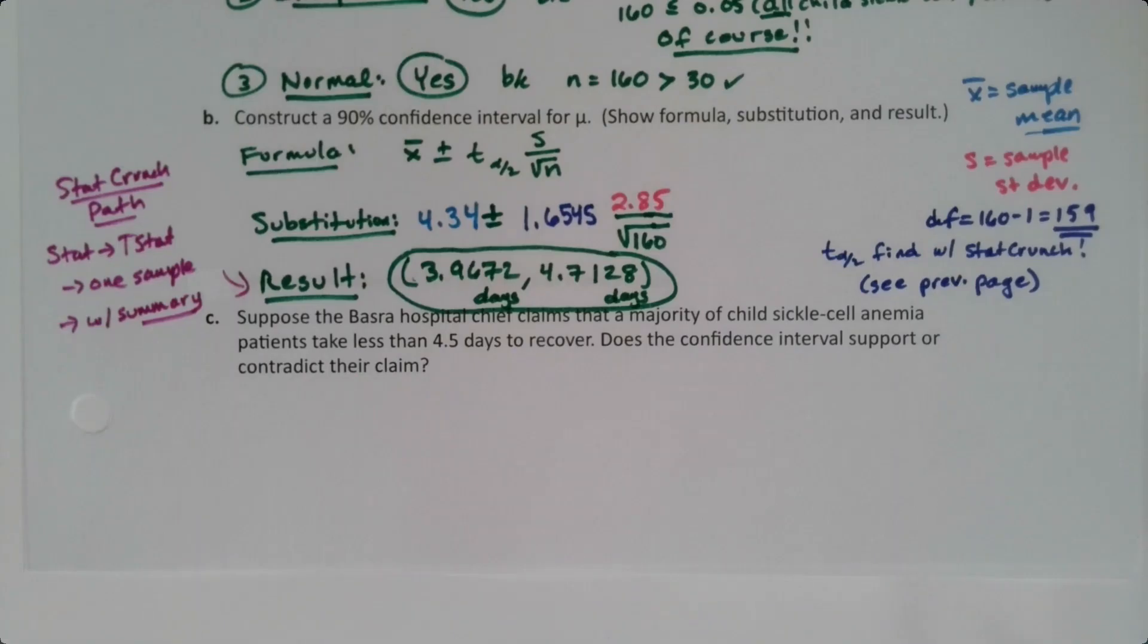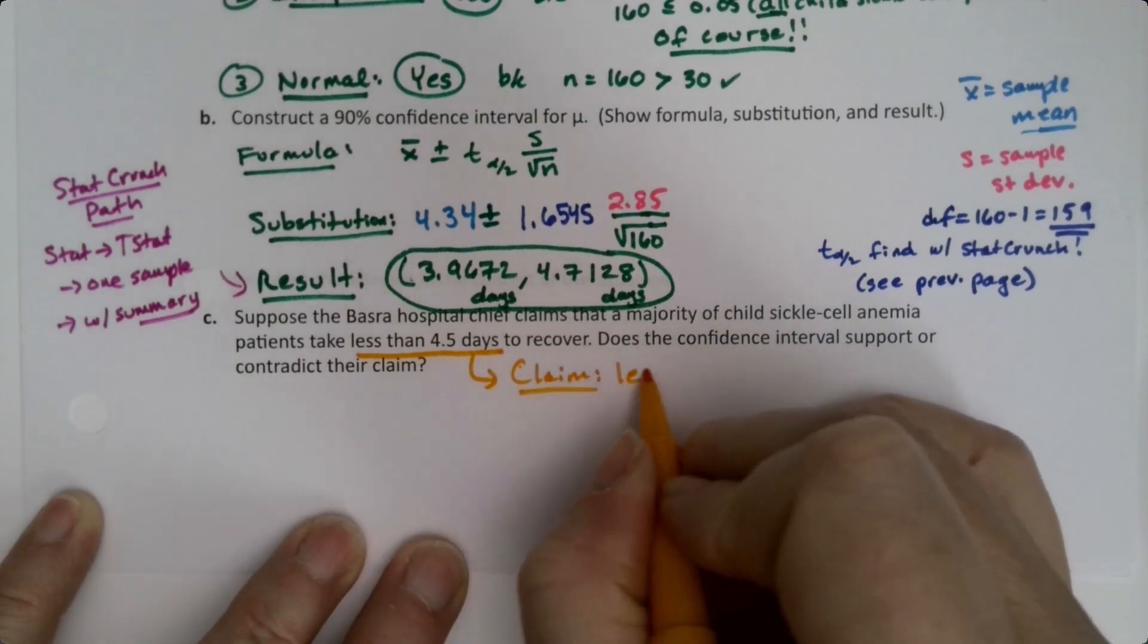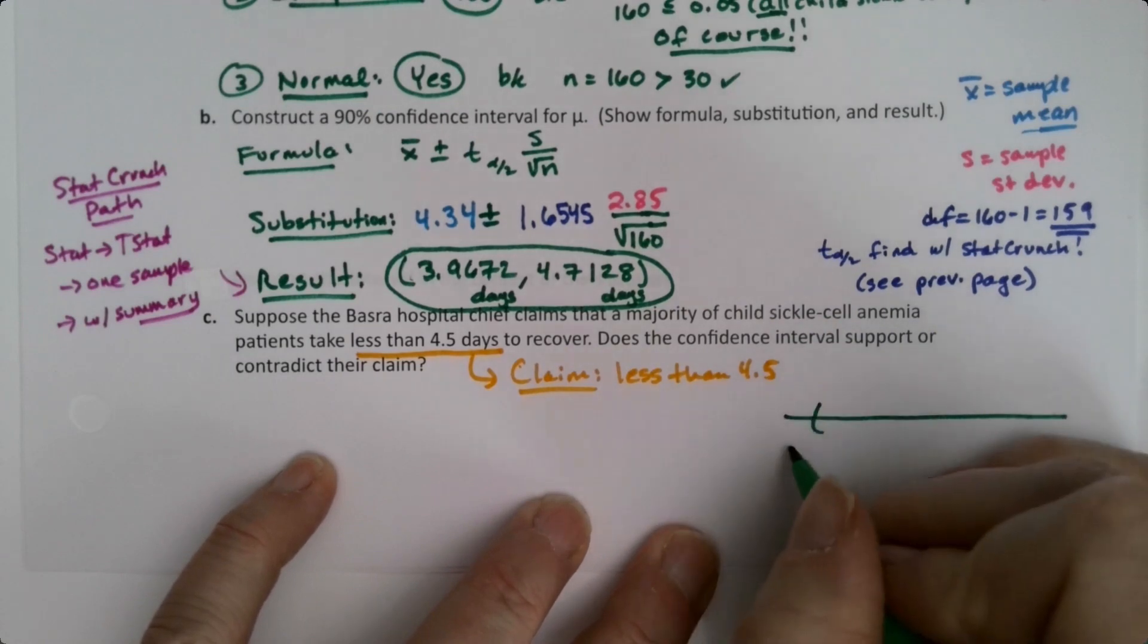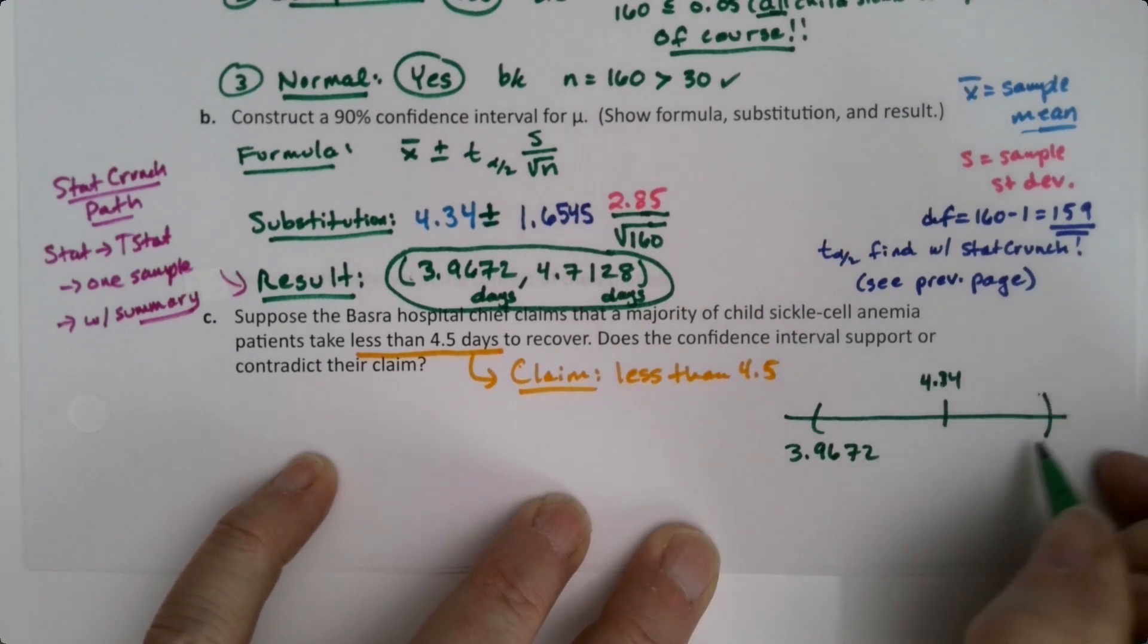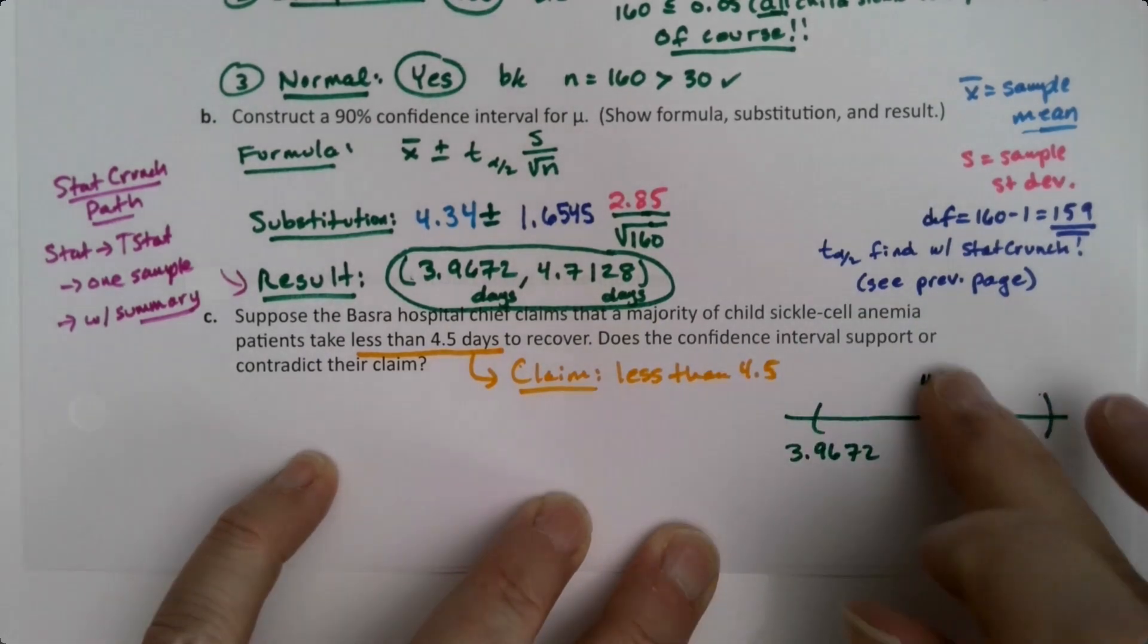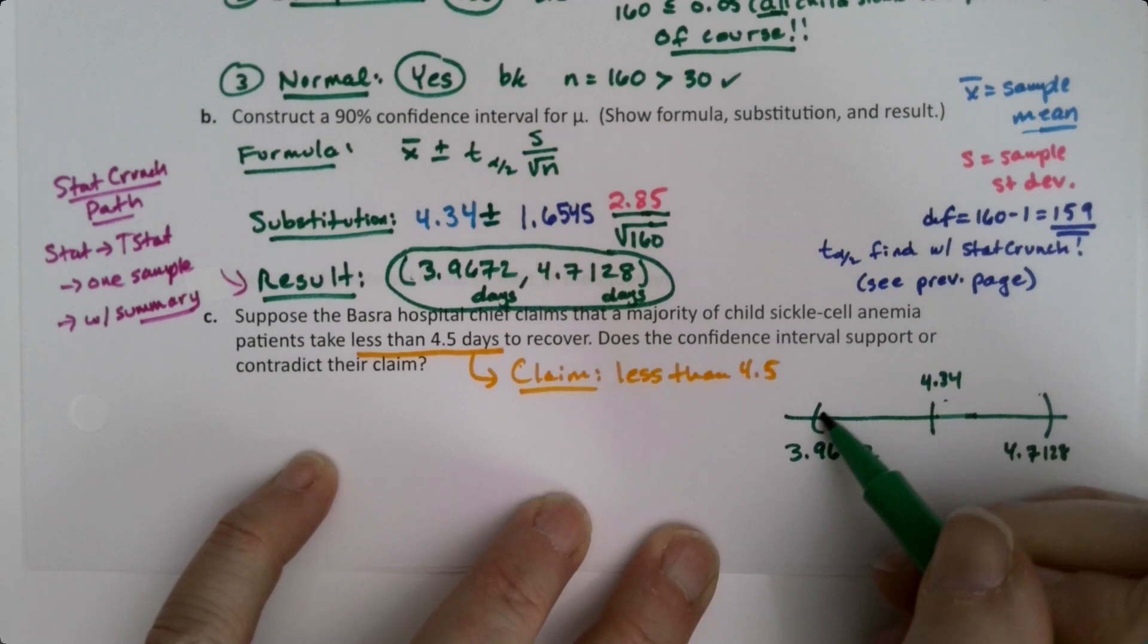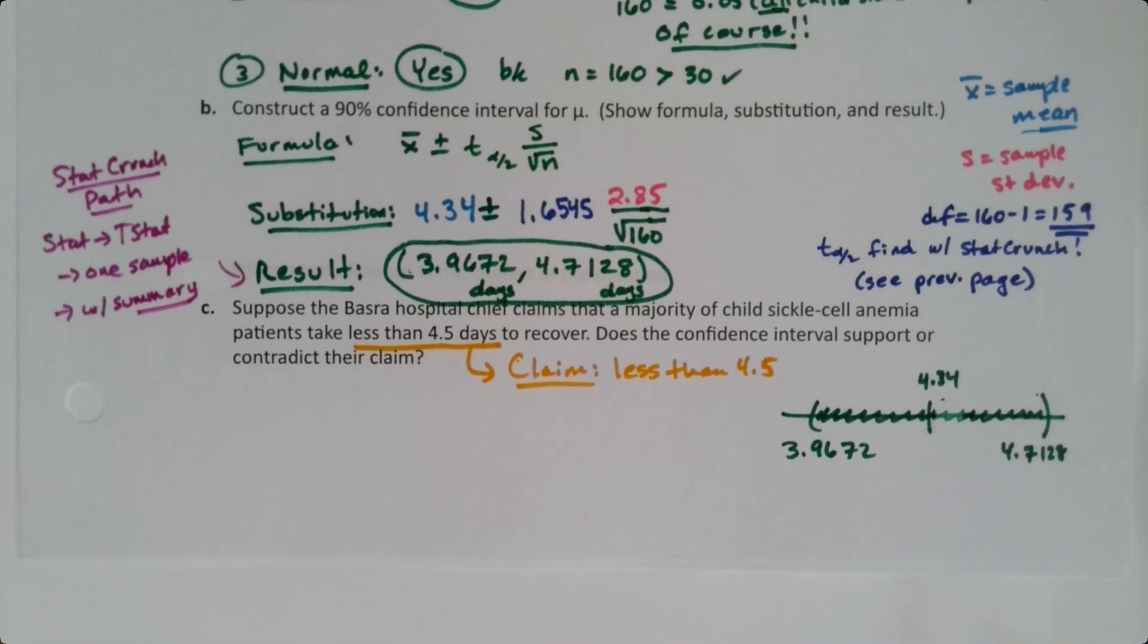Suppose the Basra Hospital chief claims that a majority of sickle cell anemia patients take less than 4.5 days to recover. Does the confidence interval support or contradict their claim? Okay, so let's read that a little bit. The claim that they're making is that patients take less than 4.5 days. So this is the claim, right? Less than 4.5. So now, let's draw a picture of our interval. Our interval goes from 3.9672, and it has 4.34 here in the middle, up to, that wasn't quite the middle. There it is. And then this is 4.7128. And our interval is everything between, right? It's all of those values. So you have to ask yourself, is your entire interval below 4.5?